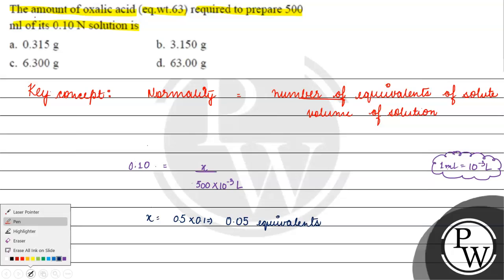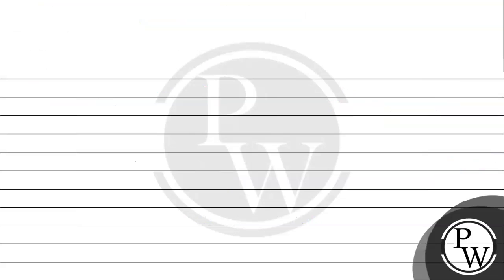Now, basically, what do we have to do? The number of equivalents is basically equal to mass by equivalent weight. Number of equivalents.